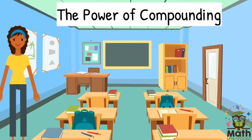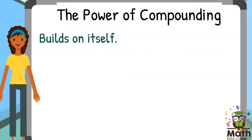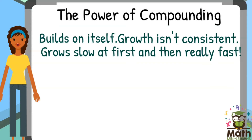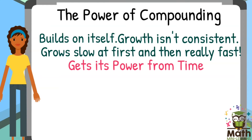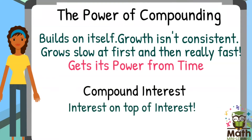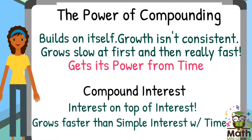In the penny riddle, the pennies built up fast because money builds on itself. The growth wasn't consistent — it grew slow in the beginning and then really fast. That's because compounding gets its power from time: the more time goes by, the faster it grows. This is true for compound interest — it builds on itself, growing interest on top of interest. This is great if you're making an investment for a long time, not so great if you're taking out a loan.